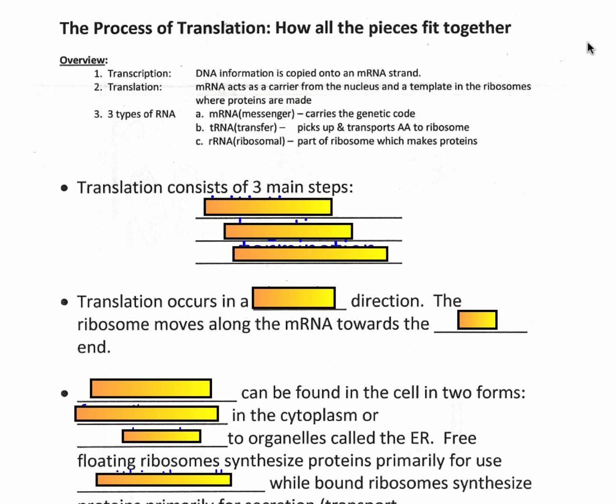We're going to look at the process of translation. Before we do, because we're going to go into some of the higher level details here, make sure you have a strong understanding of the central dogma of biology. The idea that DNA codes for proteins — that one gene, one specific section of DNA, when transcribed into mRNA and translated by a ribosome, will produce a specific protein with specific amino acids in sequence.